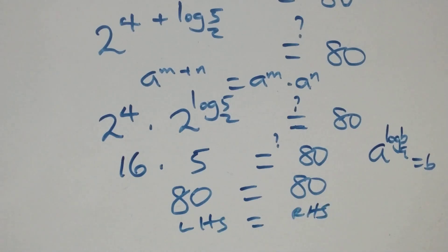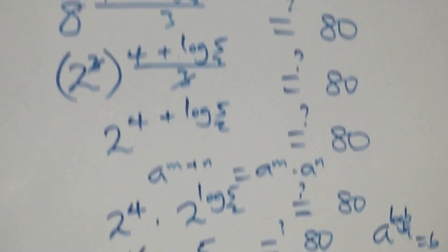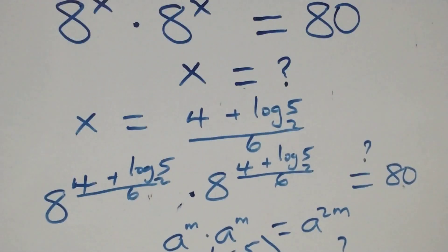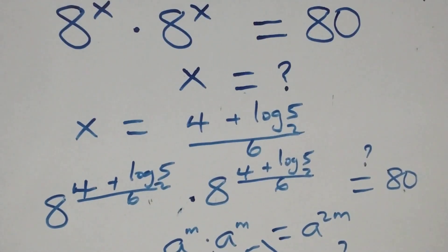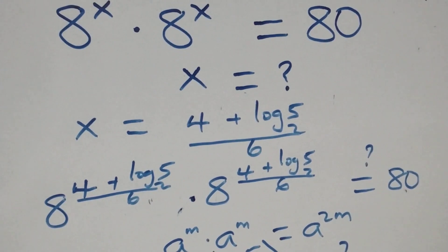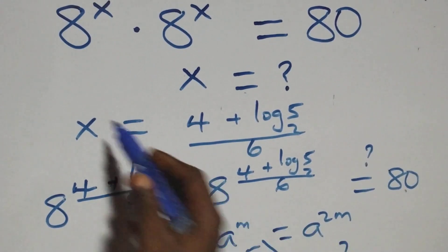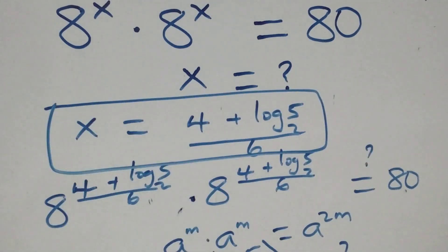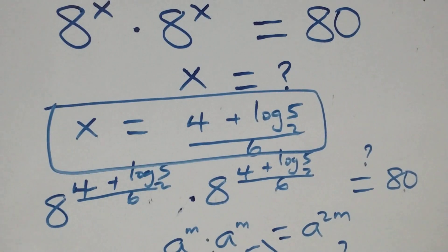Therefore, we conclude that x equals (4 plus log base 2 of 5) all over 6, and this satisfies the given problem. Thank you for watching. Don't forget to subscribe for more videos, turn the notification bell on, share this video, give it a thumbs up, and put your comment below. See you next class, bye for now.